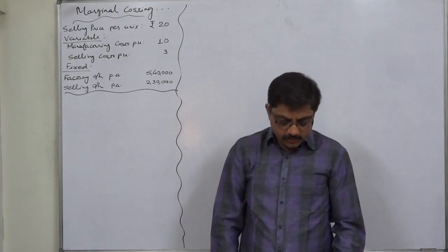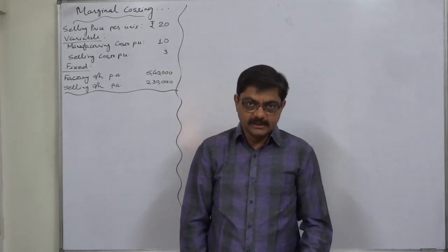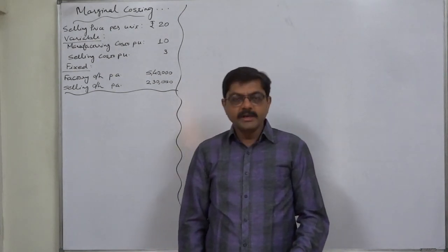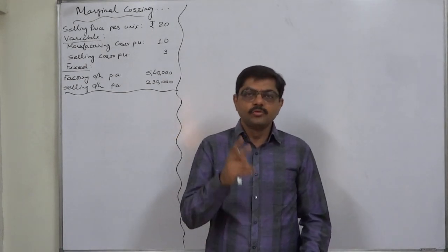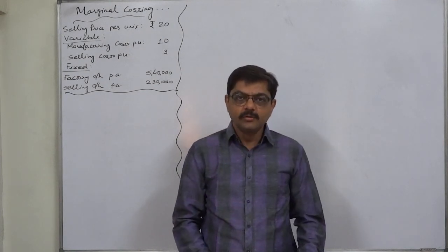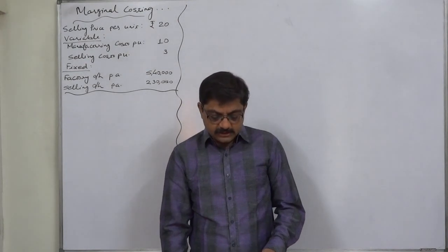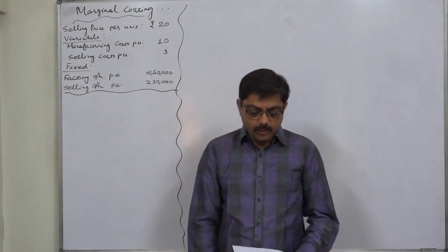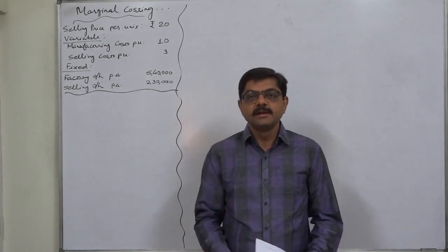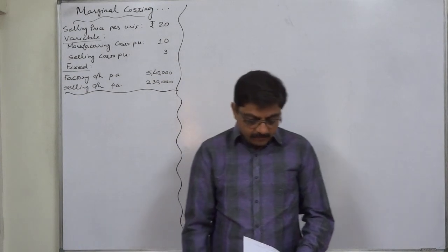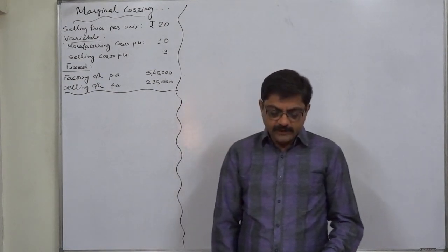Required: Number one, to find the amount of profit or loss if sales are 1,50,000 units. Number two, to calculate the break-even point — that means break-even sales quantity as well as break-even sales value. Also under number two, to find the number of units that must be sold to earn a profit of ₹5,60,000. Number three, to calculate the number of units that must be sold to earn a profit of 10% on sales.